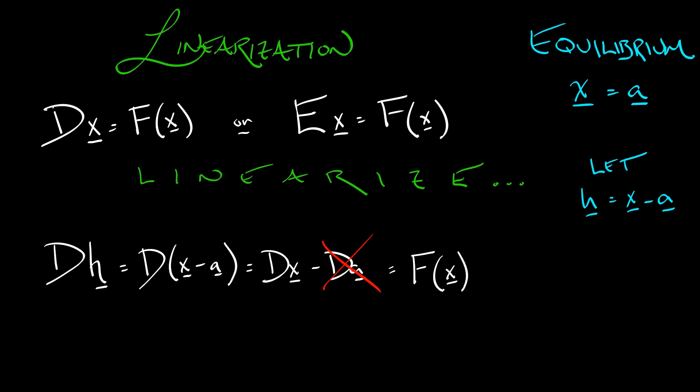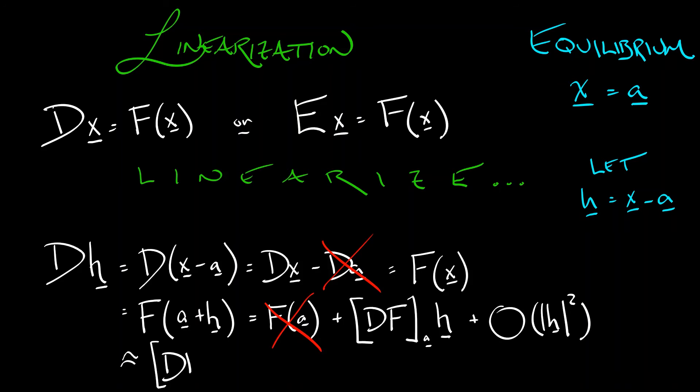That means that dh equals dx, which is f of x. Now it's time to Taylor expand that guy about x equals a. So we're going to say that f of x is really f at a plus h. That is, by Taylor's formula, f at a plus the derivative of f at a times h plus terms that are higher order in h. Now, ignoring those higher order terms and using the fact that for an equilibrium, f of a is equal to zero, that means that dh is approximately, or to first order, equal to the derivative of f at a times h. That is a linear dynamical system. We have linearized the dynamics about the equilibrium.